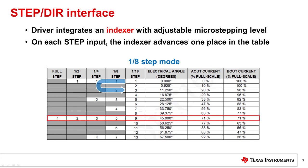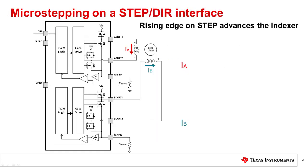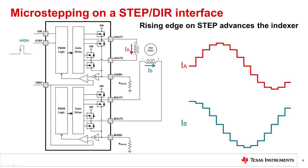This produces a rotor movement that is half of the displacement of the 1/4 microstep mode for each rising edge of the step pin. Depending on the microstep setting, the indexer may not necessarily start at index 1. The red box shown on the indexer table indicates the starting point of the stepper driver indexer at power on. This animation shows how the current in the motor winding changes with each rising edge on the step pin. The state of the DIR pin determines the direction that the motor moves. If the DIR pin is low, the indexer will iterate in reverse through the indexer table.